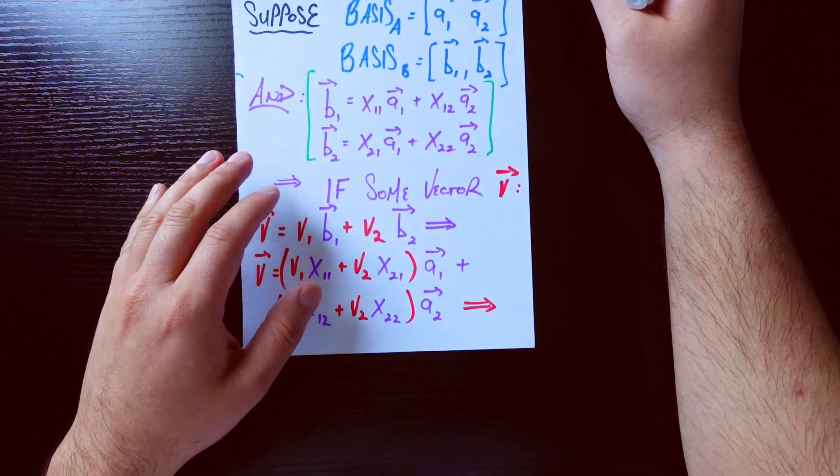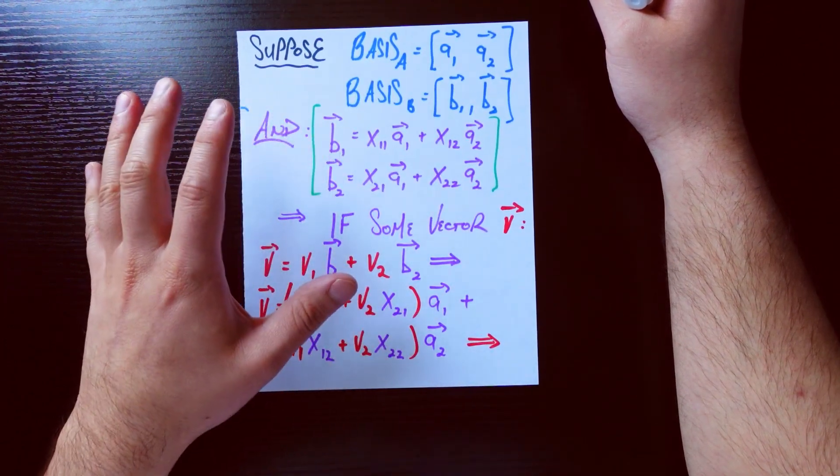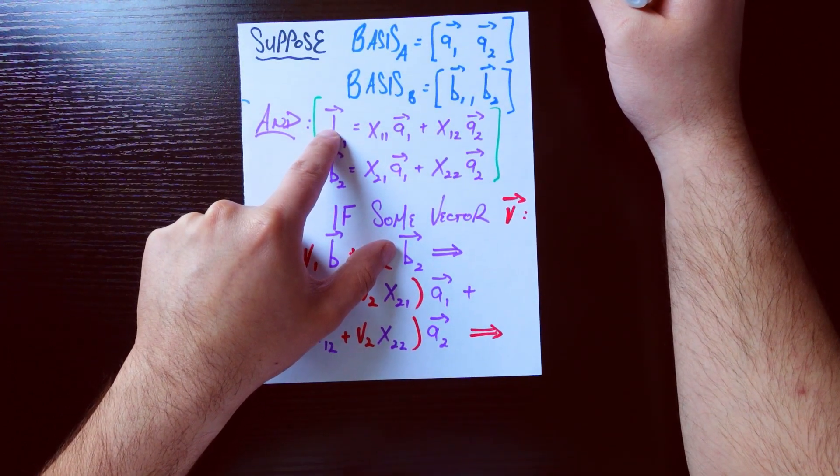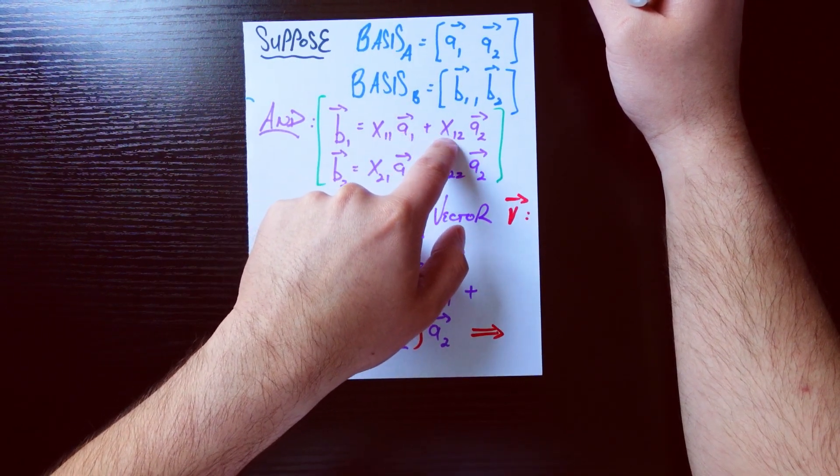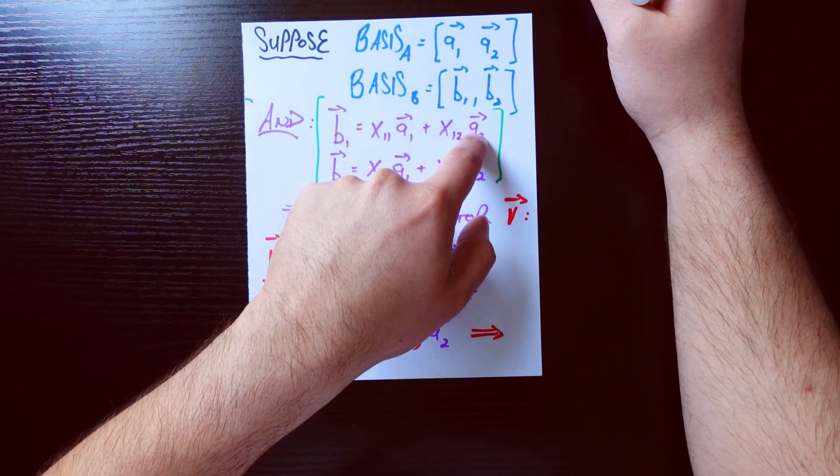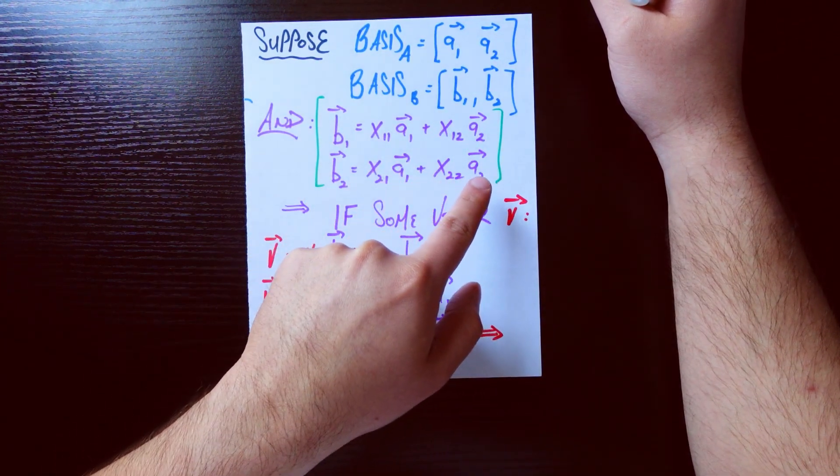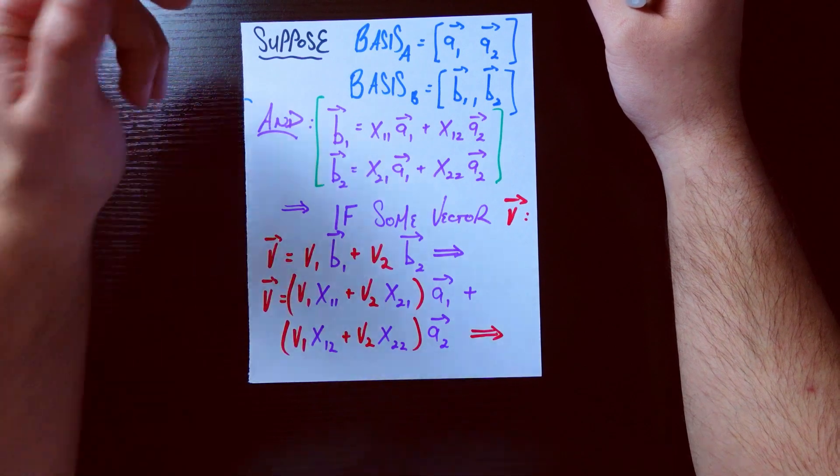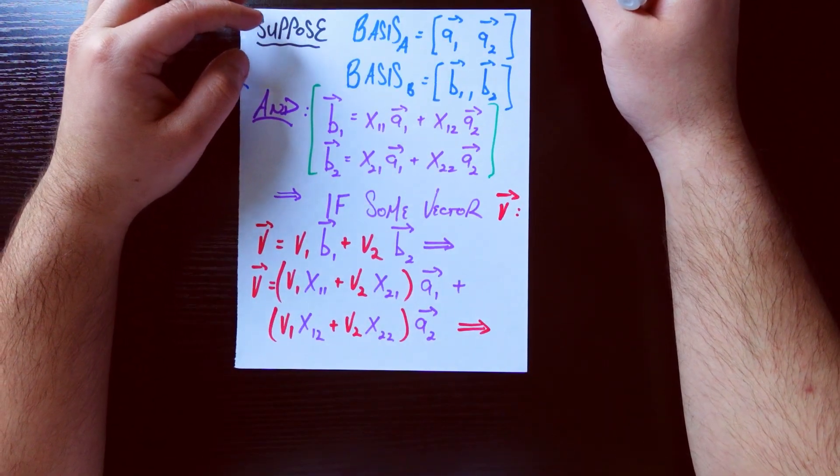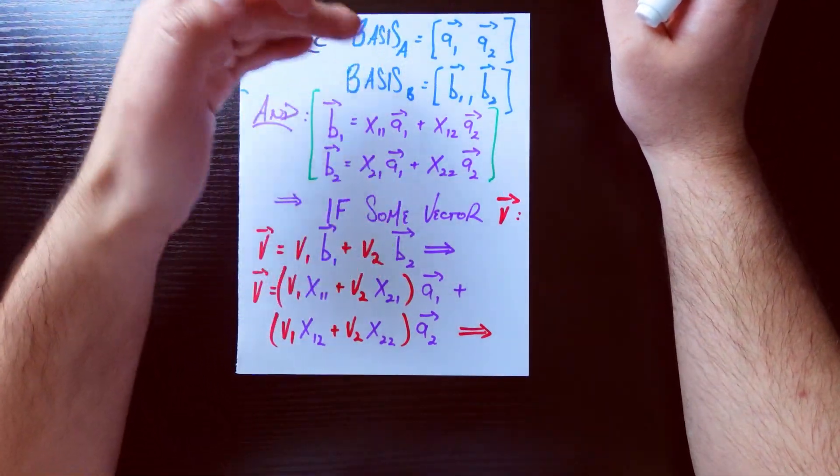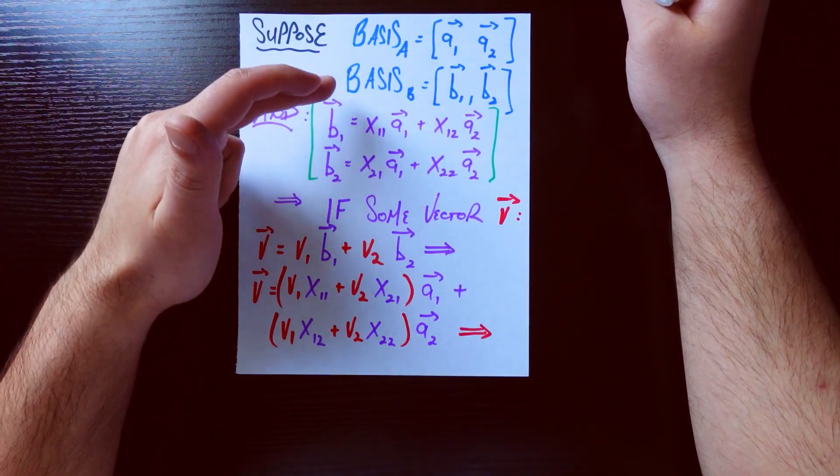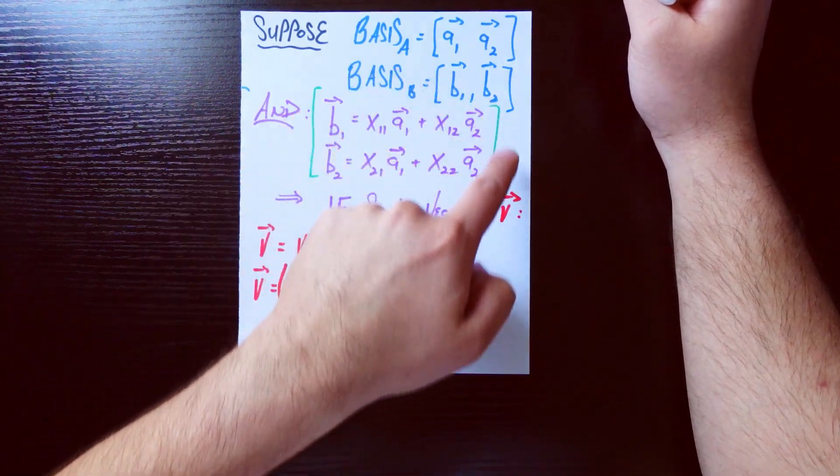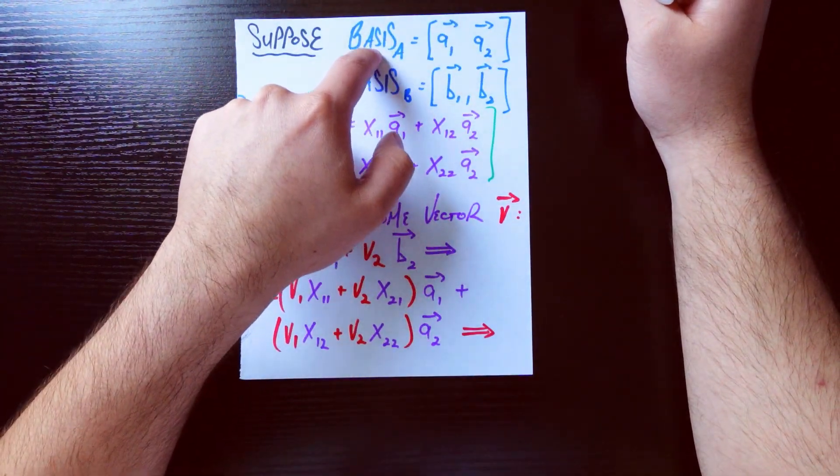And furthermore, let's say that we can translate basis vectors like this. So basis vector b1 is equal to x11 times basis vector a1 plus x12 times basis vector a2, and similarly for b2. So let me backtrack a little bit because I've just been speaking in formula for the last minute. Basically we have these two bases, which is the plural of basis, and we're saying that you can represent one basis, basis B, as some linear combinations of the original basis, which is basis A.